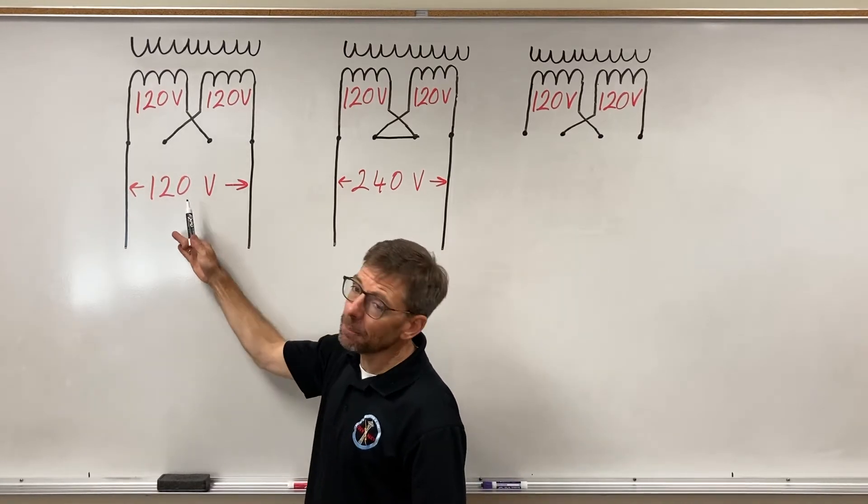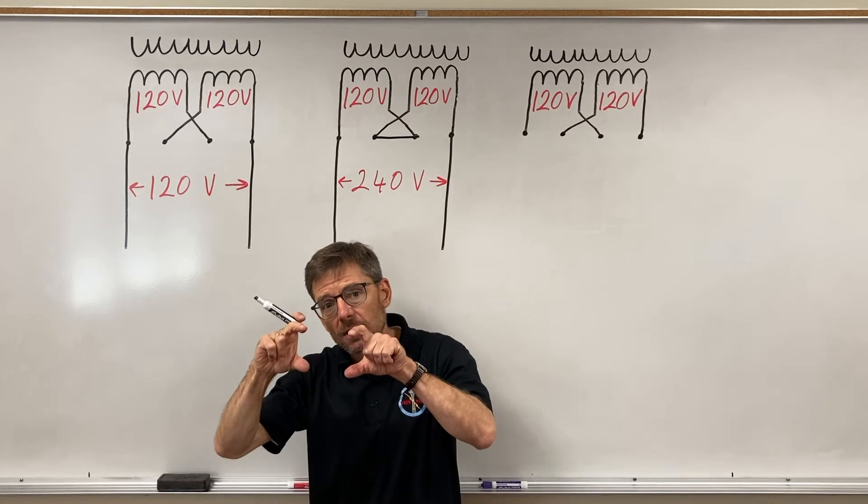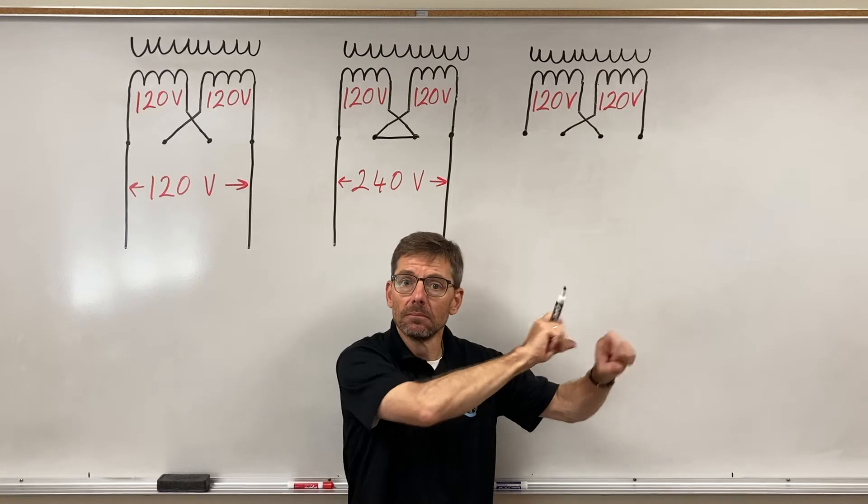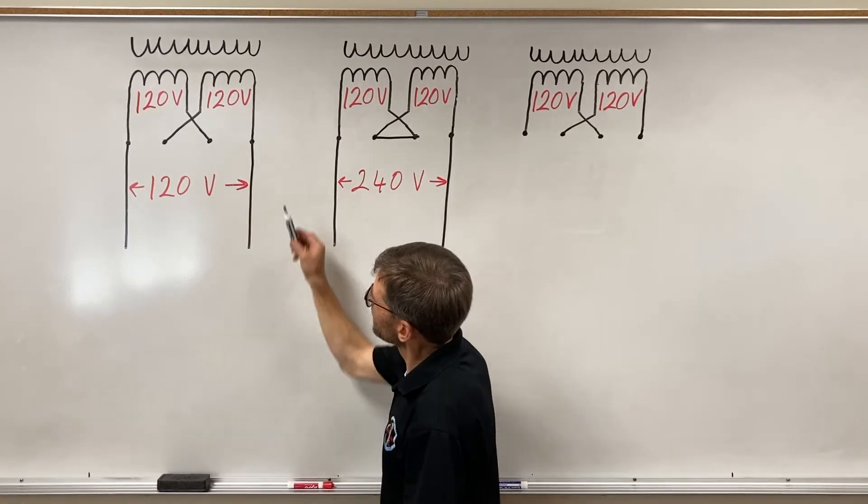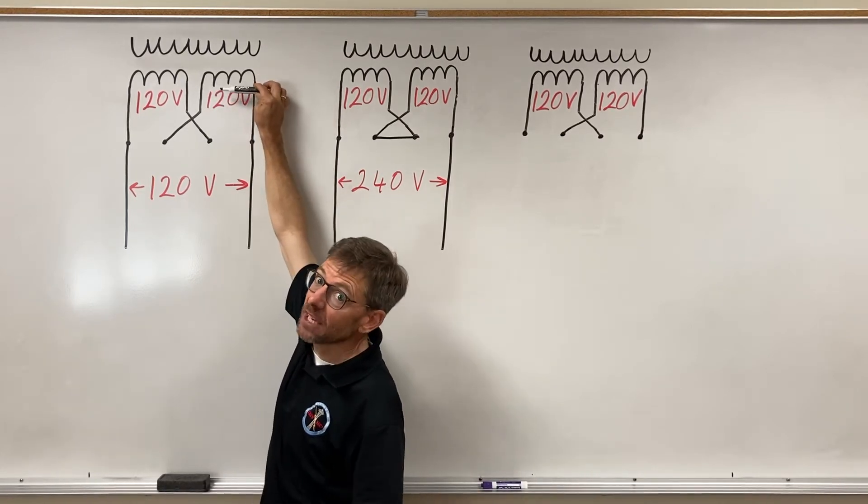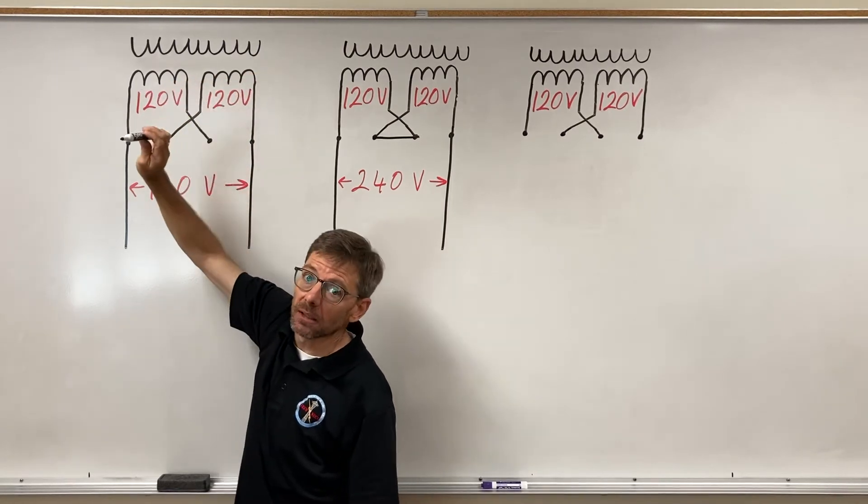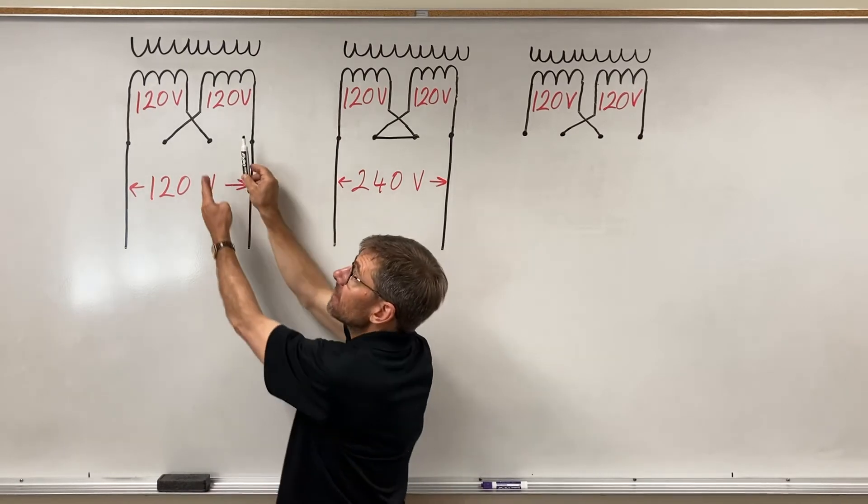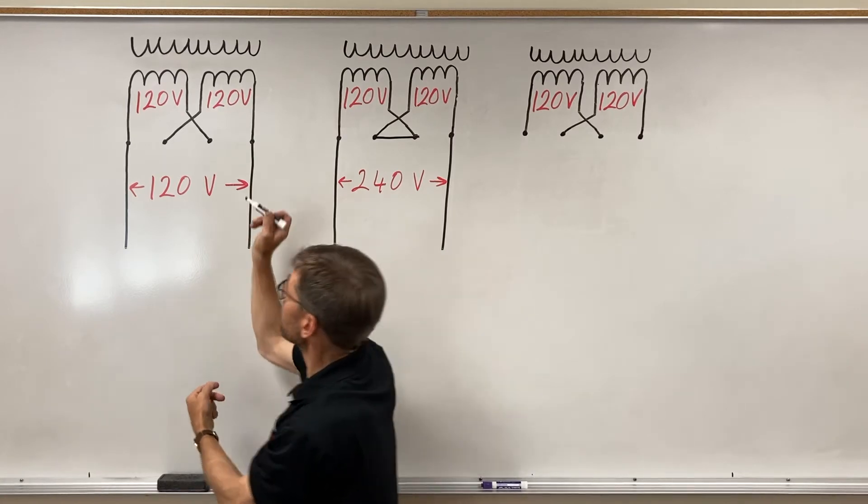But if I want to keep 120, just like those two batteries, I'm going to have to put them in parallel to keep the voltage the same. How do I do that? This winding and this winding each have induced in them 120 volts. So I want to take the, this is the key part here, I need to take the right side of each winding and connect them together.